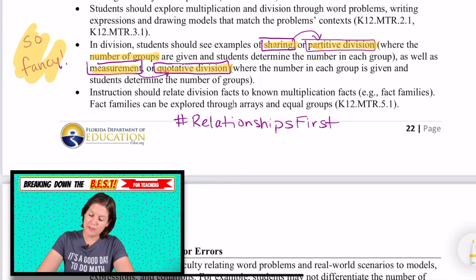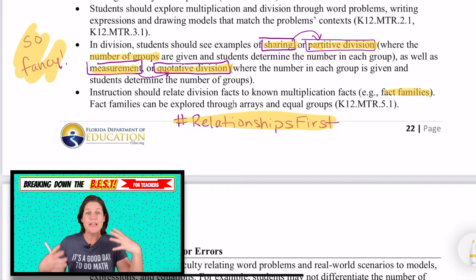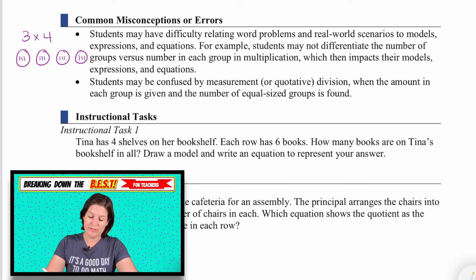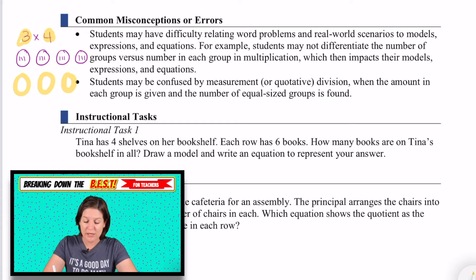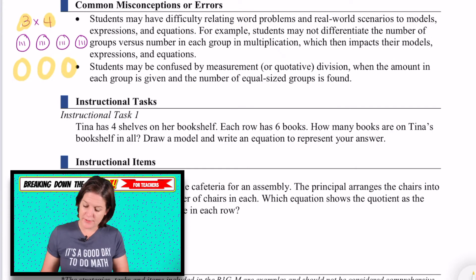This is the start of our fact families. Just like as teachers, relationships matter — relationships first. We need to make sure that we are always going through the relationships for multiplication and division, connecting them, showing that they are related. A big common misconception is that three times four — if a student draws three in each group and makes four groups, they're not modeling the expression correctly, because the three should stand for the number of groups. It should be three groups with four in each group. Now they'll get to the same product because of the commutative property, but we really need to make sure that their drawings match their expressions.